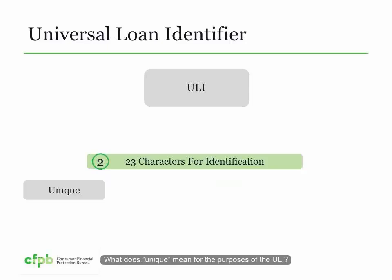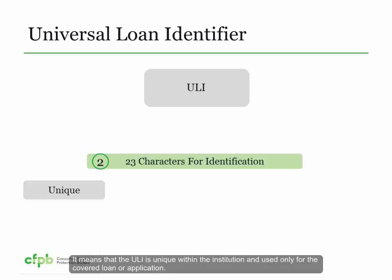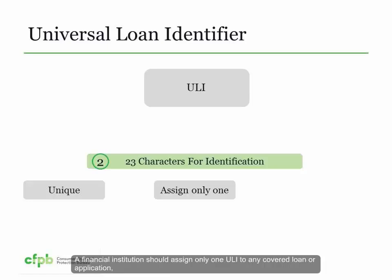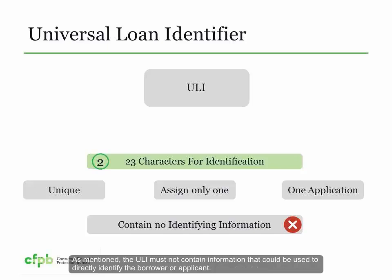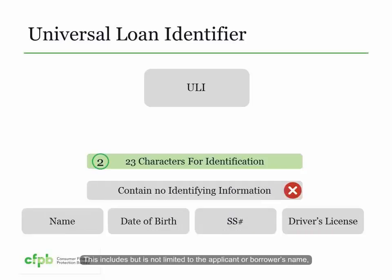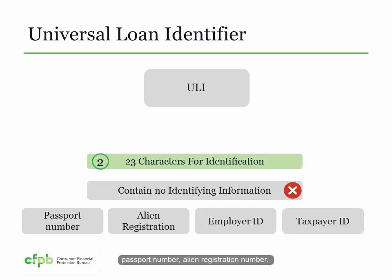The ULI contains three components. The first component is the financial institution's LEI. The second component represents a set of up to 23 characters assigned by the financial institution to identify the covered loan or application. The characters can be letters or numerals, or a combination of letters and numerals. These characters must be unique within the financial institution and must not include information that can be used to directly identify the applicant or borrower. The third component is a check digit.